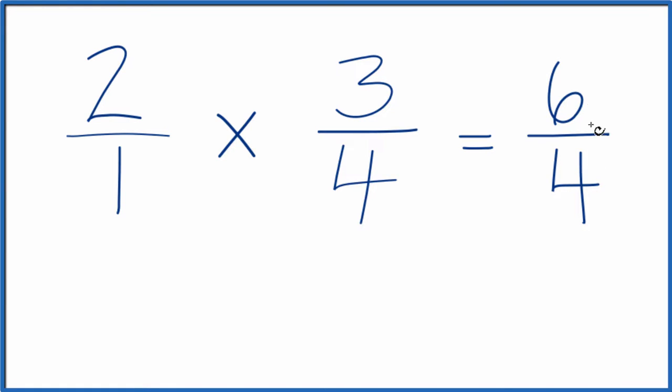This is an improper fraction. So let's simplify this and then get it as a mixed number. So these are both even numbers. So I'm going to divide 6 by 2 and 4 by 2.